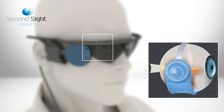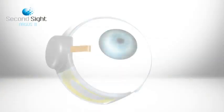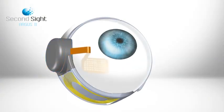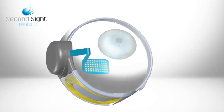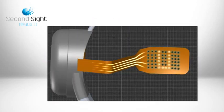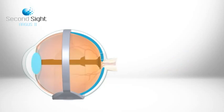The implant consists of a receiver and an array of electrodes. Instructions are received and corresponding signals sent to the array which emit small pulses of electricity.